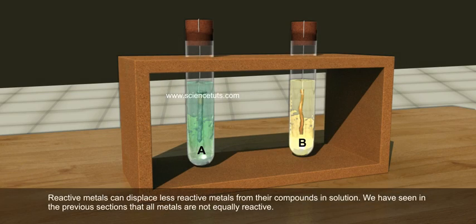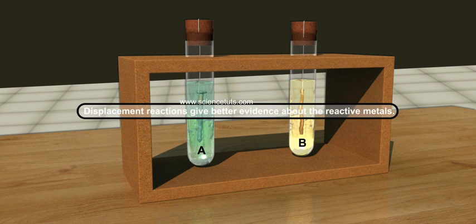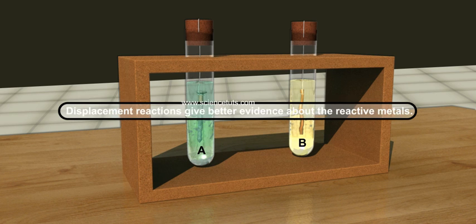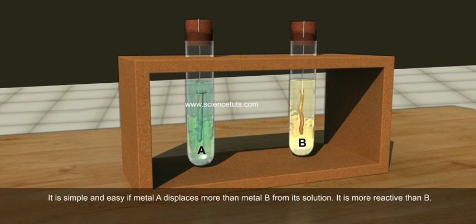Reactive metals can displace less reactive metals from their compounds in solution. We have seen that all metals are not equally reactive. Displacement reactions give better evidence about reactive metals. It is simple and easy: if metal A displaces metal B from its solution, it is more reactive than B.